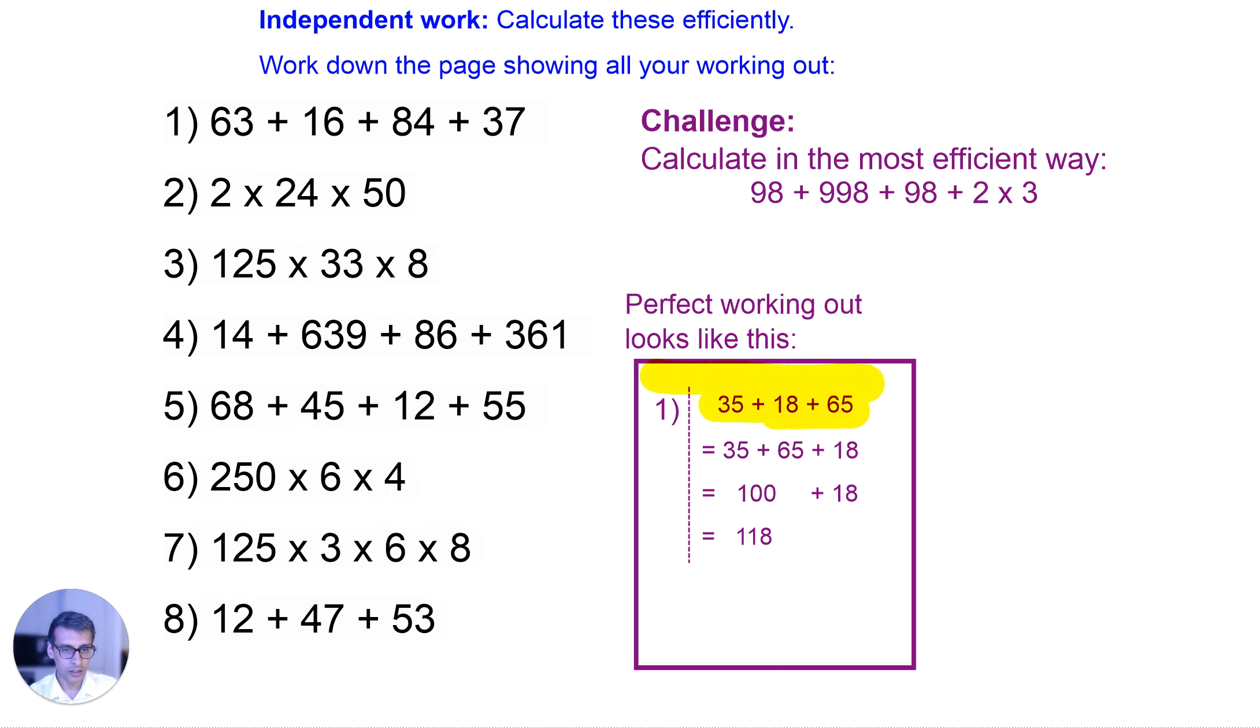So what you see here in this purple box, the working out should be going down the page nice and neat, and every row should be equivalent to the row above or below it. So pause the video here and then I'm going to show you the answers on the next part.